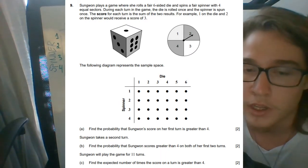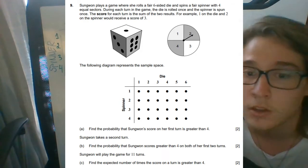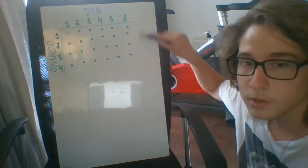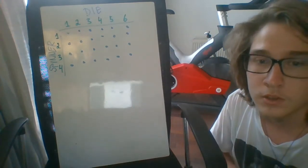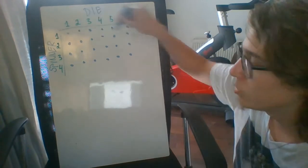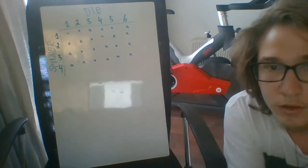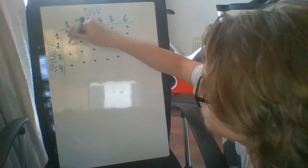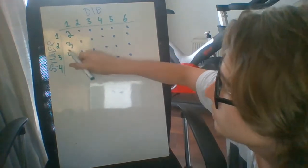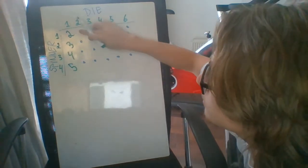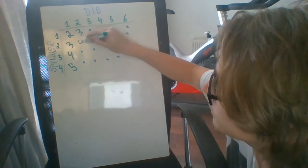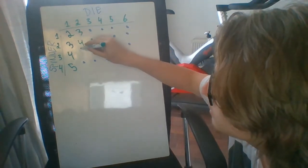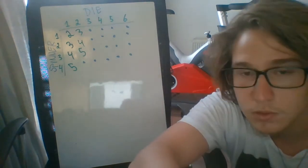Before I even go into part A, just looking at all the parts — A, B, and C — they all ask for when the score is greater than four. So we can play around with this diagram a little bit. Right now with the points it's not as intuitive, but if we write one plus one is two, one plus two is three, and so on until we fill up the whole diagram, it's going to make this problem a lot easier. That's the first step: simplifying and making use of the diagram.